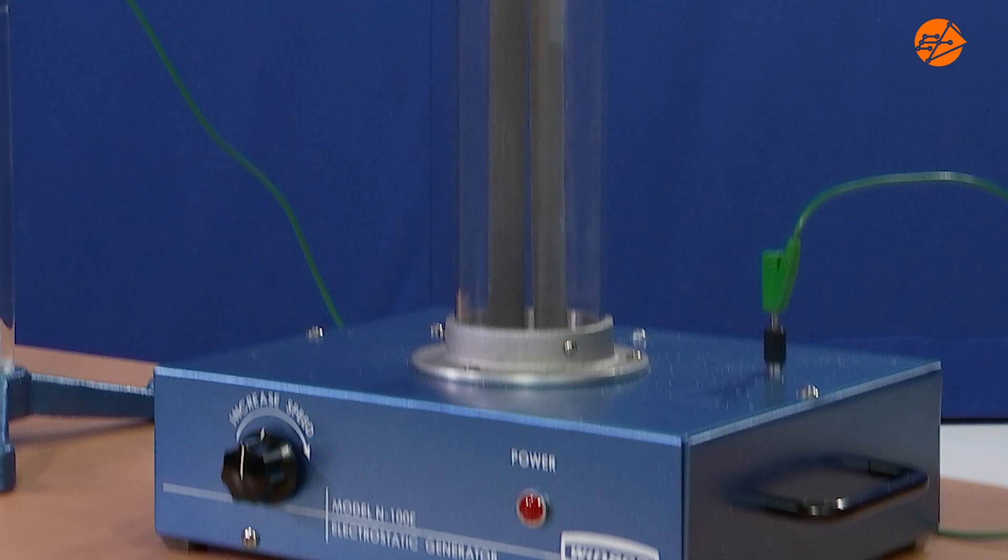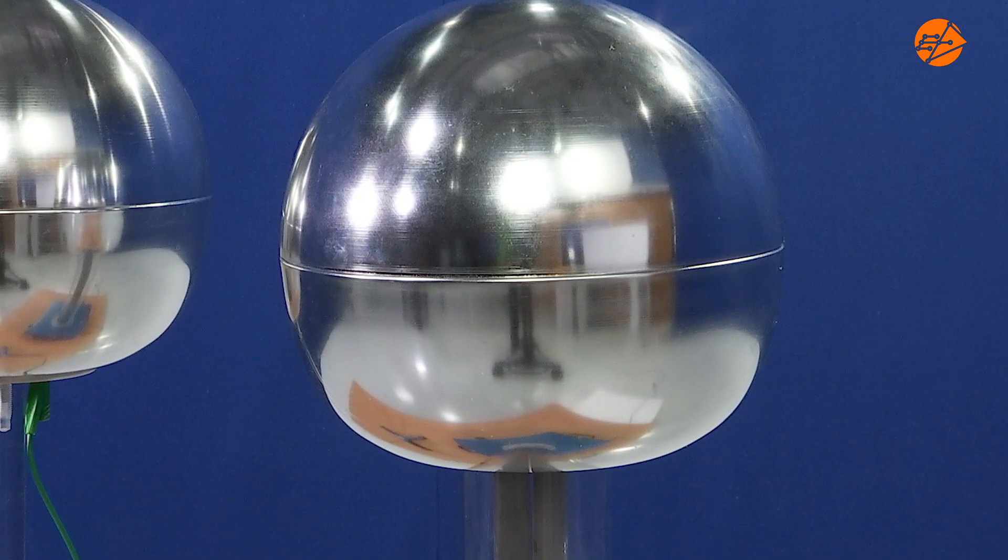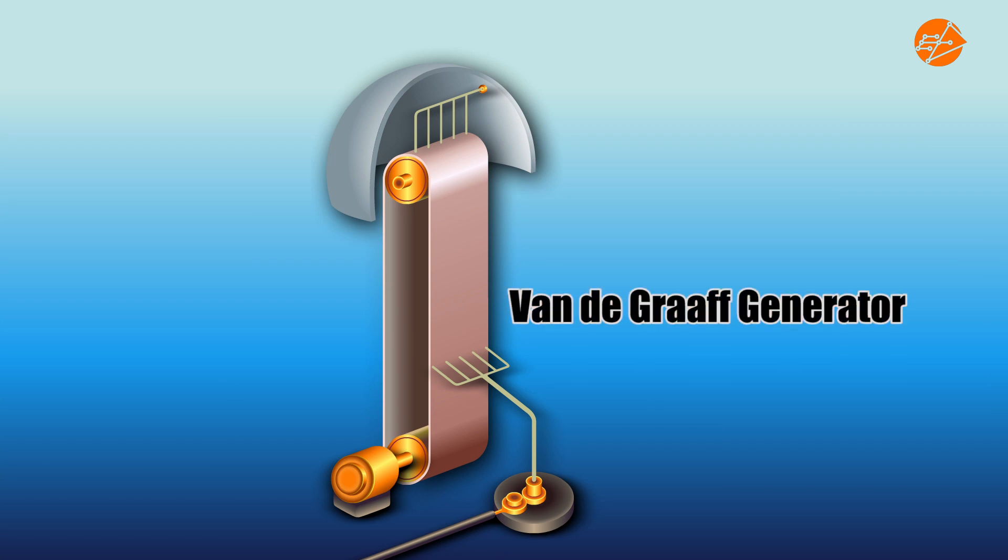This is a Van de Graaff generator. It is used to generate and store charges. Large electrostatic charges can be produced using a Van de Graaff generator.